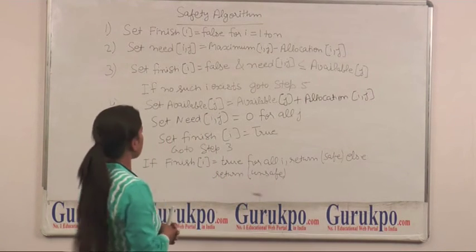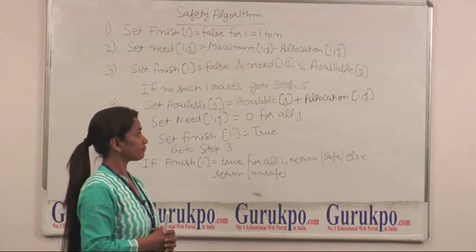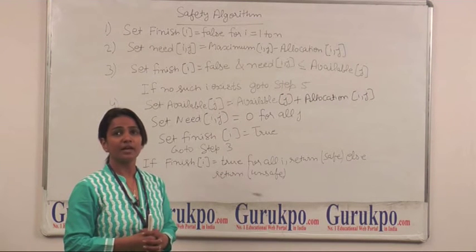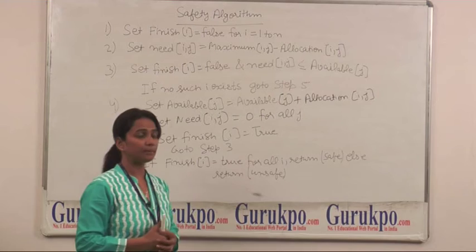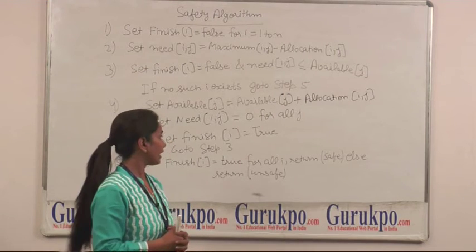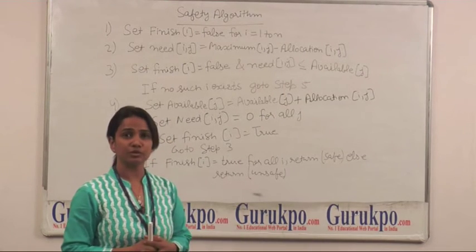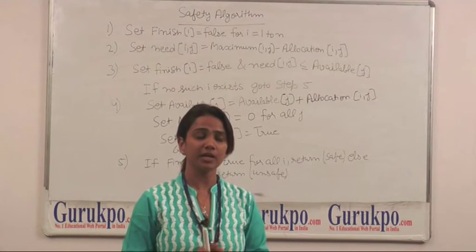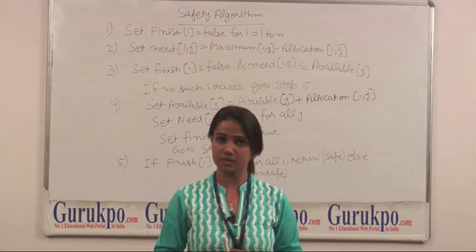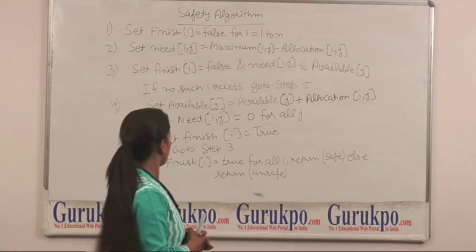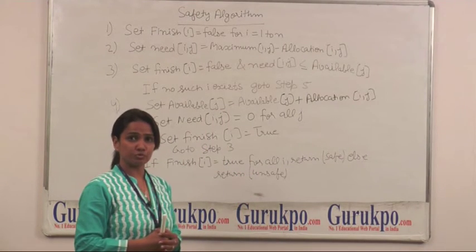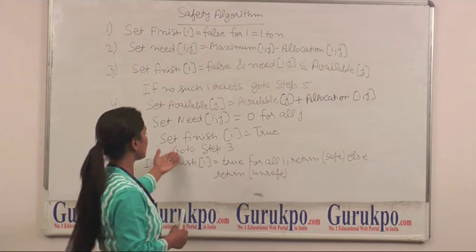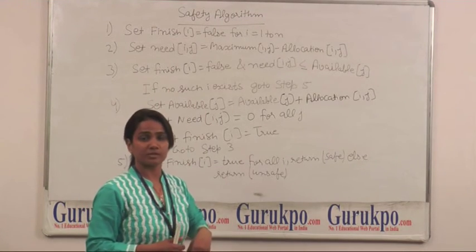In step number 4, we calculate availability and need of each process. Available equals available plus allocation, and need equals zero. If need of each process becomes zero, then we set finish equals to true.